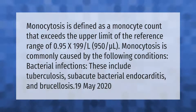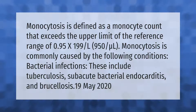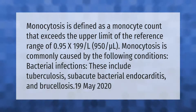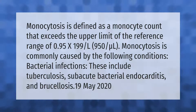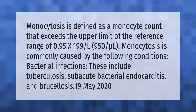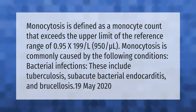Monocytosis is defined as a monocyte count that exceeds the upper limit of the reference range of 0.95 × 10⁹ per liter, or 950 per microliter. Monocytosis is commonly caused by the following conditions: bacterial infections, including tuberculosis and subacute bacterial endocarditis.